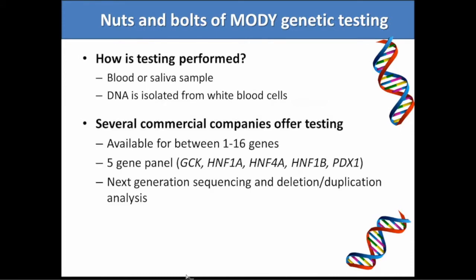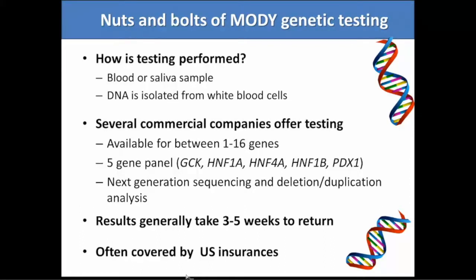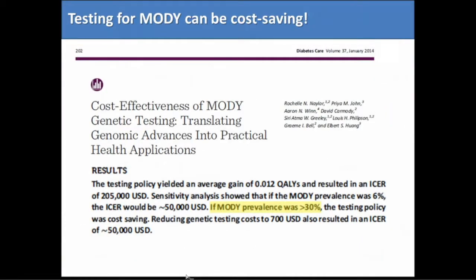When ordering genetic testing, there are now several companies that offer it and you can get a free kit in the mail. They do sequencing and deletion-duplication analysis, and results take just a few weeks. It's often covered by U.S. insurances, which is a real progress of the last few years. A 2014 study showed that if the prevalence in a population is predicted to be greater than 30% having MODY, it would be cost-effective. Costs are continuing to drop, so it's even more cost-effective now.